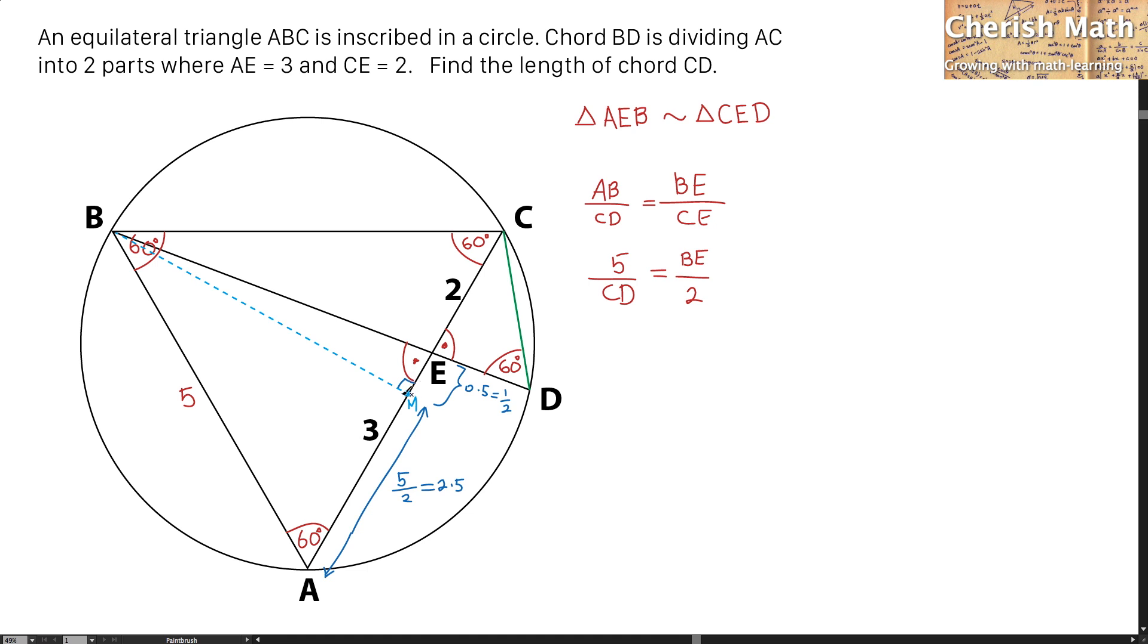Now, by referring to the triangle of BMC, I will be using trigonometry to solve for the value of BM. That turns out sine 60 degrees equals BM divided by 5. Sine 60 degrees is the square root of 3 divided by 2, and that equals BM over 5. Now the value of BM is 5 times the square root of 3 divided by 2.